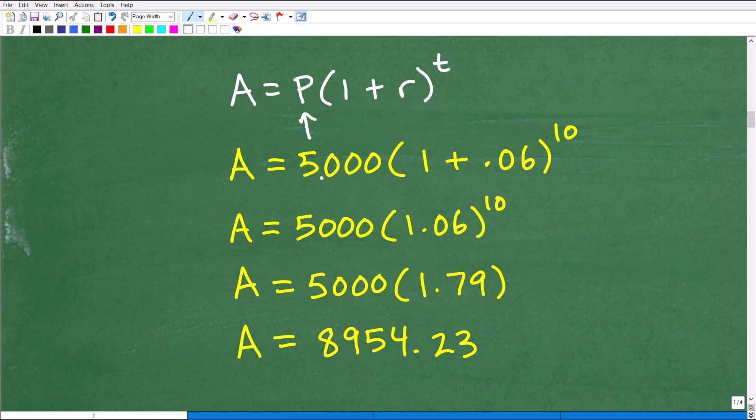So P, again, is going to be $5,000. That's going to be our principal amount. So 1 plus R. R is our growth rate, our compound interest rate as a decimal. So 6% as a decimal is 0.06. And T is 10 years, and we have a 10 right there. So you've got to be very careful here. You've got to figure out what the order of operations is. So let's go ahead and do what's inside parentheses first. So 1 plus 0.06 is 1.06, and that's going to be to the 10th power.